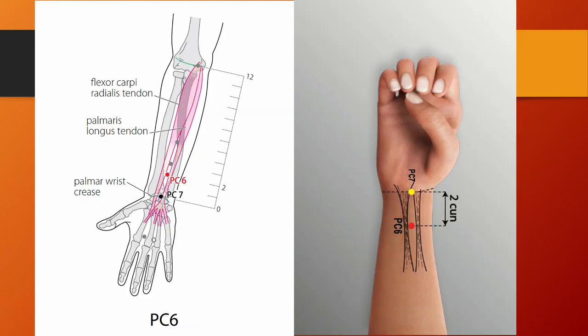To relieve the spasm, we have Pericardium 6 and Spleen 6. Pericardium 6, Neiguan or inner gate, is located on the palmar aspect of the forearm, 2 tsun above the transverse crease of the wrist, on the line connecting PC3 and PC7, between the tendons of palmaris longus and flexor carpi radialis. PC6 is the luo-connecting point of the pericardium channel. Luo-connecting points can communicate with two meridians; they treat diseases of the collaterals and can be used to treat chronic diseases. Luo-connecting points are often combined with yuan-source points in treatment. Needling: perpendicular insertion, 0.5 to 1 tsun.